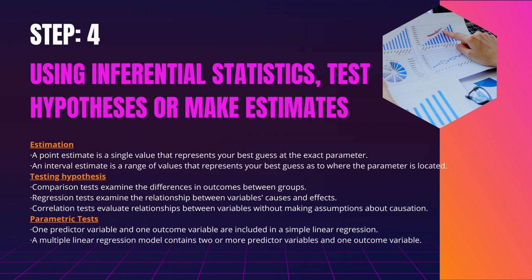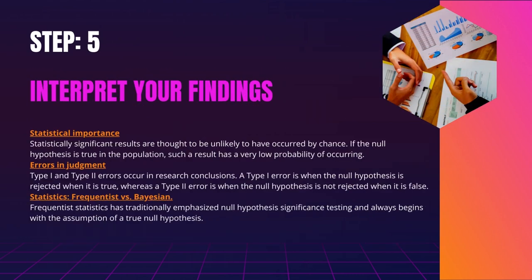Pearson's R is the only parametric correlation test. The correlation coefficient R expresses the strength of a linear relationship between two numerical variables. To determine whether the correlation in the sample is strong enough to be significant in the population, you must also perform a correlation coefficient significance test, typically a t-test, to obtain a p-value. This test makes use of your sample size to determine how far the correlation coefficient deviates from zero in the population.